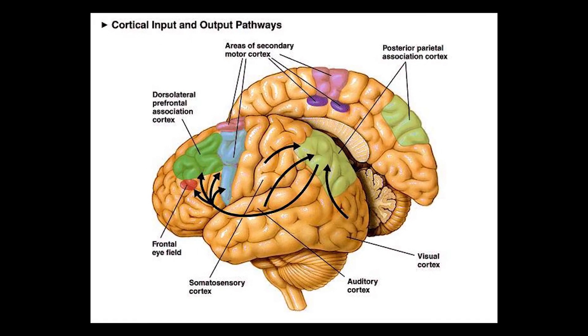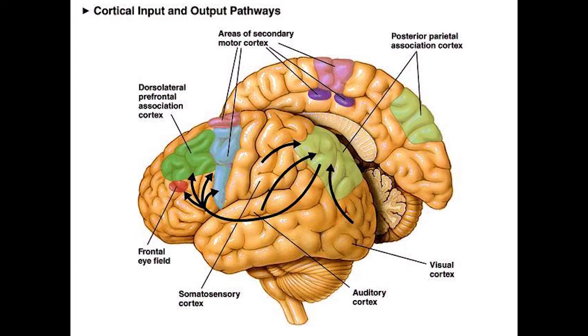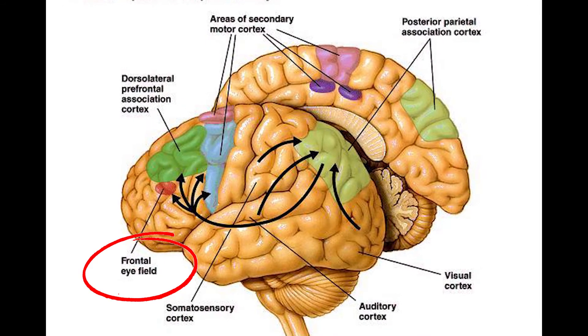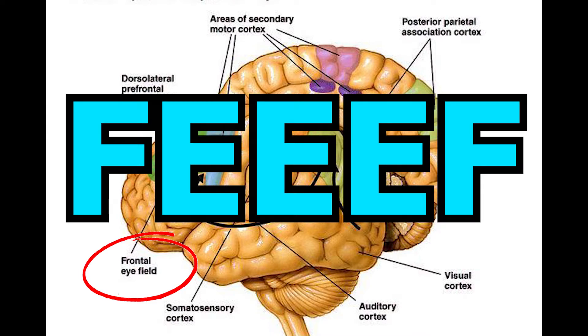So here's the pathway. It starts in the brain, as all things do. Where it starts is called the frontal eye field, or the FEF. You have one on the right and one on the left. We're just going to show one side.